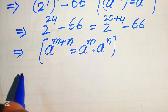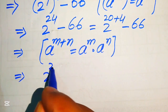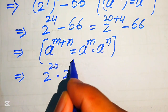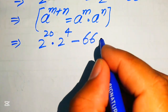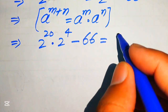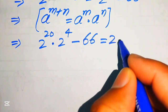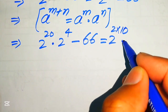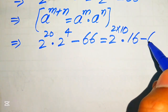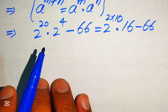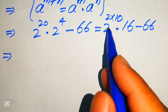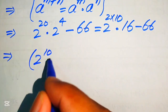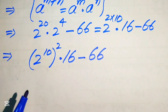According to this exponent law, we break the exponents and write 2 to the power of 20 multiplied by 2 to the power of 4, minus 66. Since 2 to the power of 4 equals 16, we write 2 to the power of 20 as 2 times 10, so the expression becomes 2 to the power of 10 squared, multiplied by 16, minus 66.